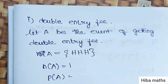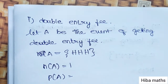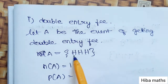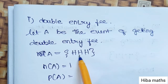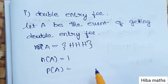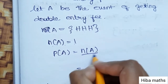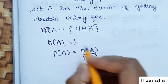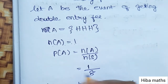Now, let A be the event of getting double entry fees. Double entry fees means getting 3 heads. So the value of A is {HHH}. The number of favourable outcomes, n(A), is 1. P(A) = n(A) / n(S).